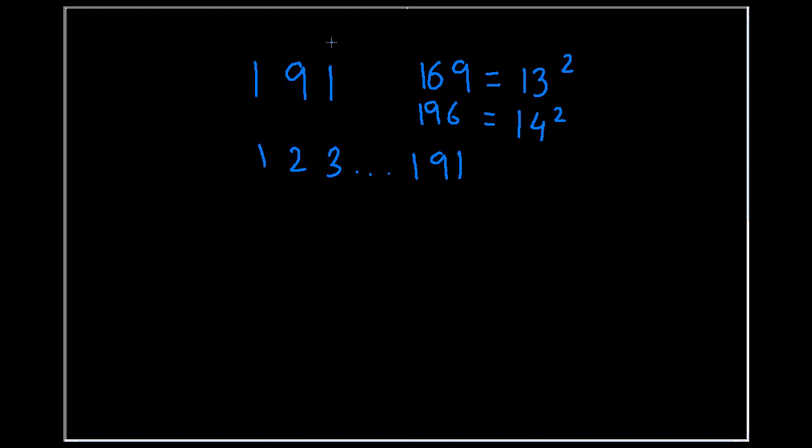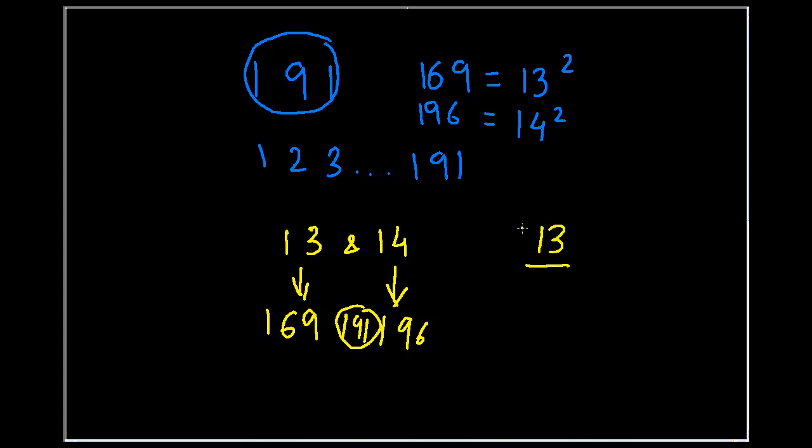Essentially, the square root of 191 has to lie between 13 and 14. That is because 13 squared is 169 and 14 squared is 196, and the number lies between these two numbers. So it's obvious that the square root also has to lie between 13 and 14, and it's going to be some fraction. Now we know that the square root lies between 13 and 14. You will select the lower number, that is 13.